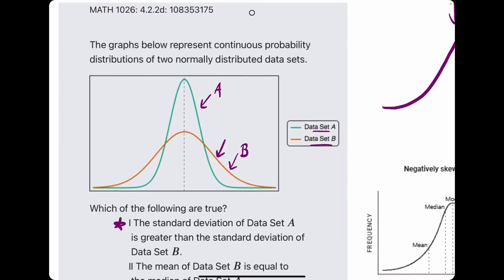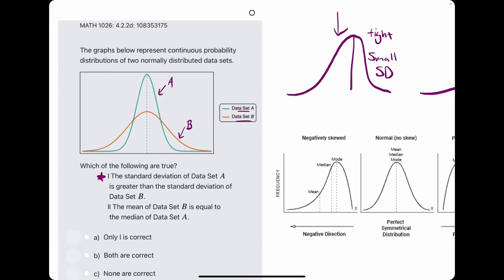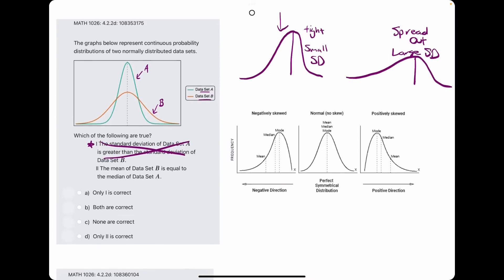In this case, B, the more spread out curve, should have a larger standard deviation, greater standard deviation than that of A. But they're saying the opposite. They're saying A has a greater standard deviation than B does, and so that is false.